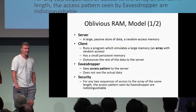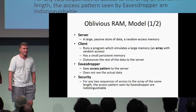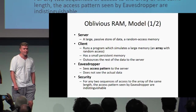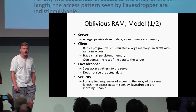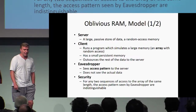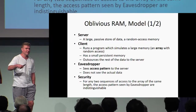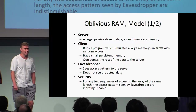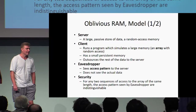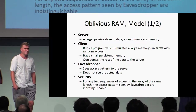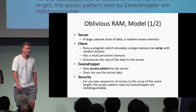Whenever the client accesses some position in the RAM of the server, the eavesdropper will be informed of the position, not the data being written or read. The reason why we can make that abstraction is that the data itself we could just simply encrypt — that would be trivial to protect. However, hiding the access patterns is in general much harder.